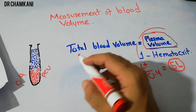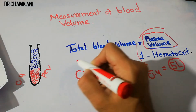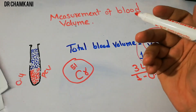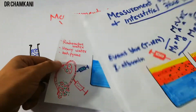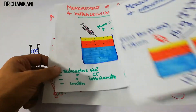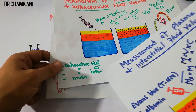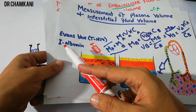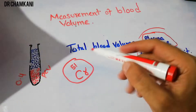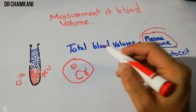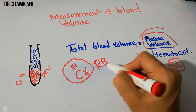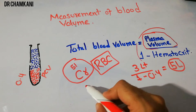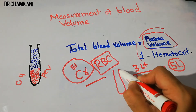Another method uses radioactive chromium. Just as we use radioactive water or heavy water for total body fluid, radioactive sodium or chloride for extracellular fluid, and radioactive iodine-labeled albumin for plasma, we can use radioactive chromium-labeled red blood cells. These labeled RBCs are injected directly into the blood.